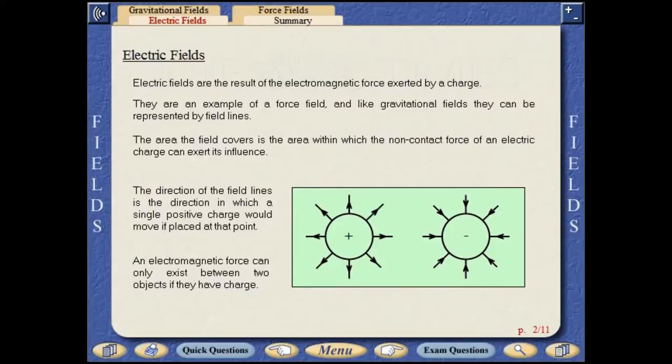The area the field covers is the area within which the non-contact force of an electric current can exert its influence. The direction of the field lines is the direction in which a small positive charge would move if placed at that point.